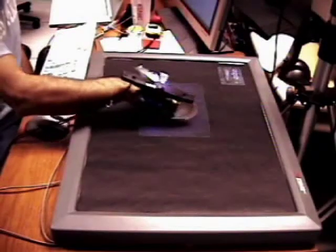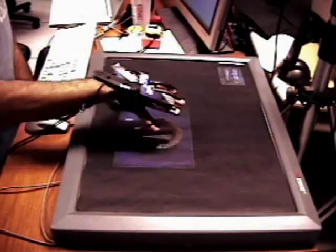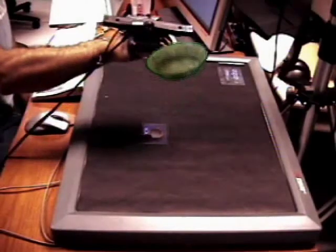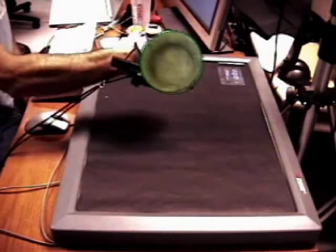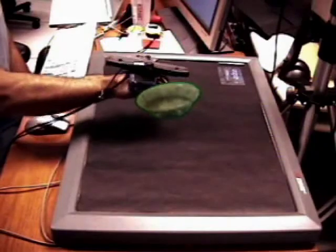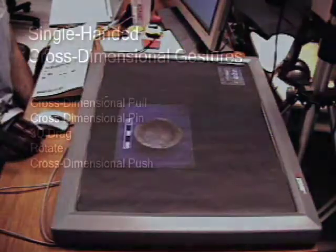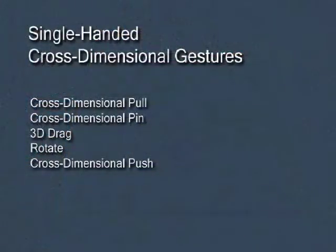We present gestural interaction techniques that integrate existing 2D and 3D visualization and interaction devices. We focus on gestures that provide a seamless transition between the 2D and 3D environments. In the following example, you can see some of the basic single-handed cross-dimensional gestures from the side viewer's perspective.